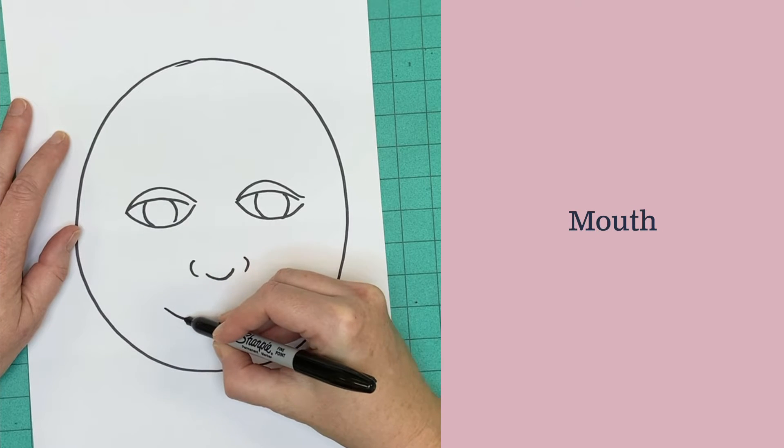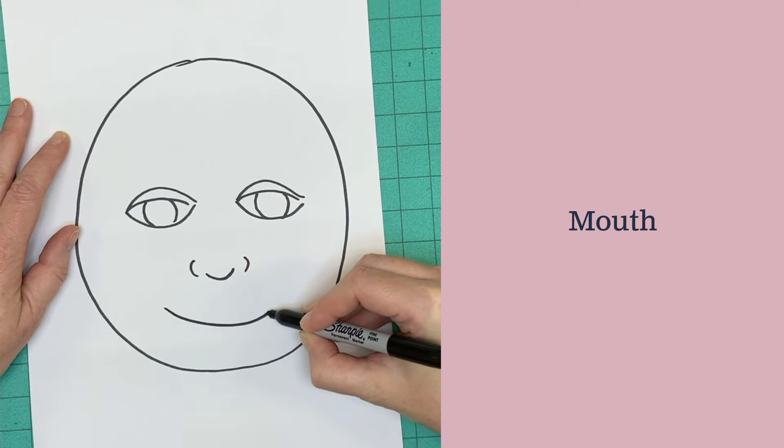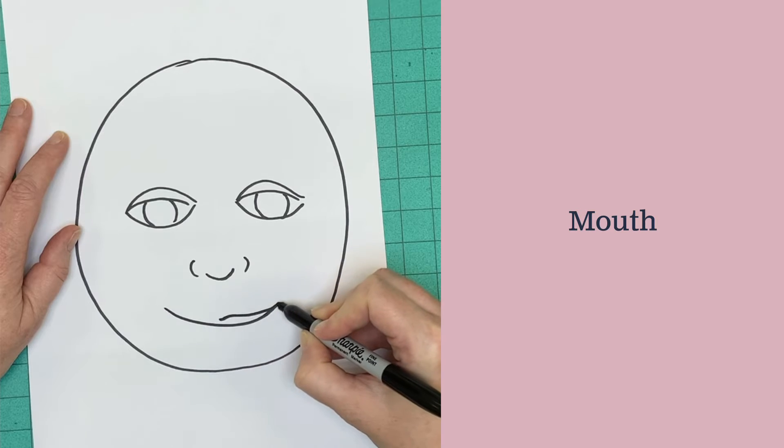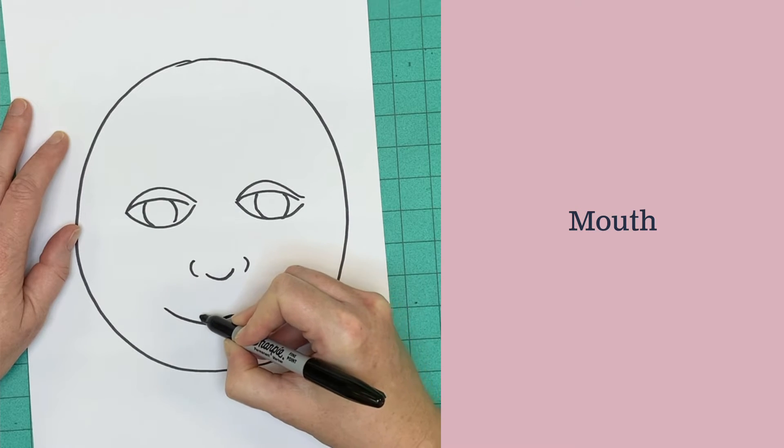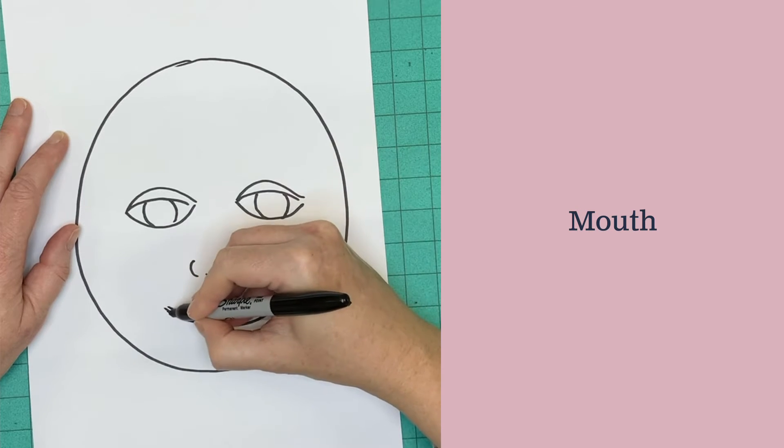Let's add a mouth. Start by drawing a line for a smile. Then above that line, put your top lip. And below that line, put your bottom lip.